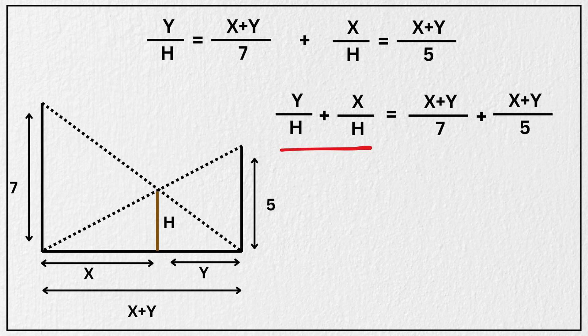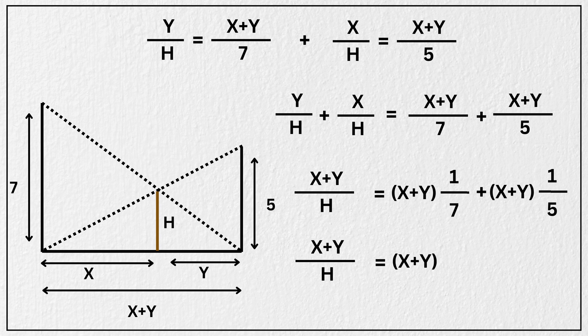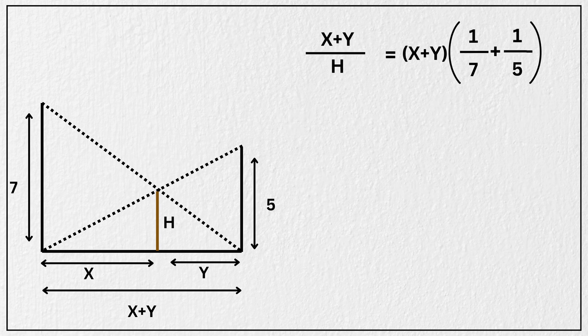So left side becomes, x plus y divided by h, and the right side is, x plus y times 1 divided by 7 plus x plus y times 1 divided by 5. Now taking x plus y out from this we get, x plus y divided by h equals x plus y times 1 divided by 7 plus 1 divided by 5. Now cancel out x plus y from both sides.